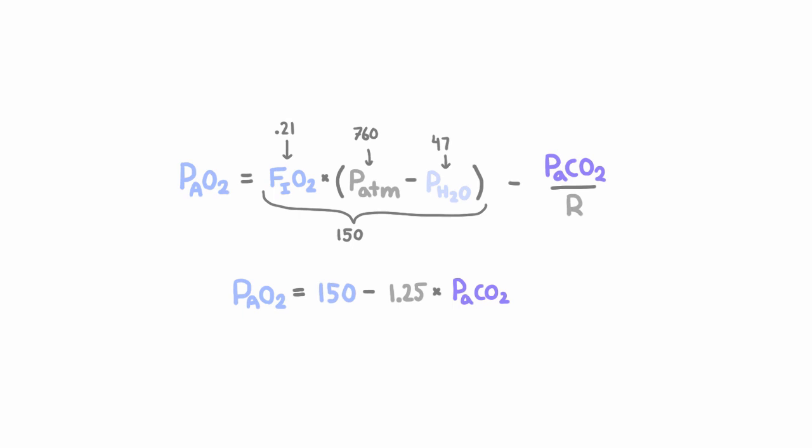And so in sum, from 10,000 feet, the general idea here is if I draw someone's ABG and measure the amount of carbon dioxide in their blood, I can plug it into this formula to deduce the amount of oxygen in their alveoli.